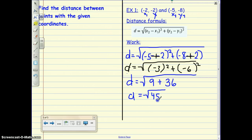And our answer is d equals the square root of 45. So you could leave your answer like this, or you could of course get the decimal answer. Either way is fine. Let's try another example.